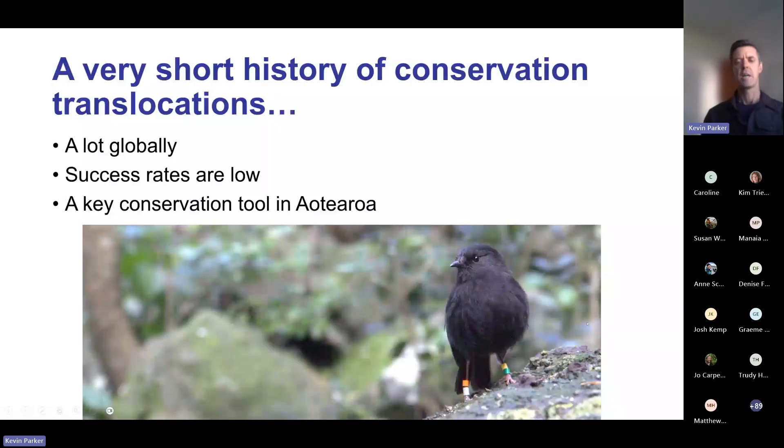A very short history of conservation translocations: there's been thousands globally, from mussels through to elephants. A feature of these translocations is that success rates have generally been quite low, although it does vary. However, they have been a really key conservation tool in Aotearoa for iconic species like this beautiful Chatham Island black robin - this is a male by the name of Hauraki, a good friend of mine.